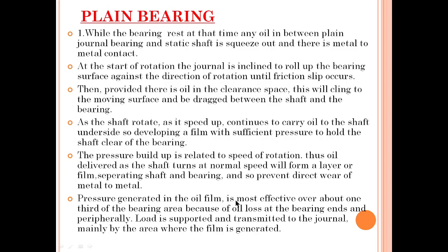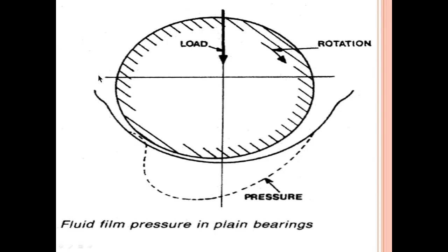Pressure generated in the oil film is most effective over about one third of the bearing area. The bearing load is supported and transmitted to the journal mainly by this area where the film is generated. As you can see, the oil wedge is formed here and it uplifts the intermediate shaft, while here the oil is loosening up. The load carrying capacity acts in this one-third area only, and hence this is called the load carrying area.